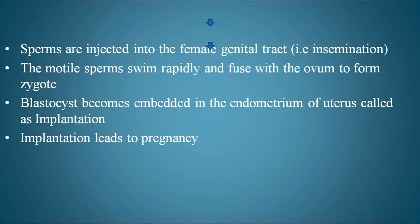The motile sperms swim rapidly and fuse with the ovum to form a zygote. The blastocyst becomes embedded in the endometrium of the uterus — this embedding is called implantation — and further implantation leads to pregnancy.